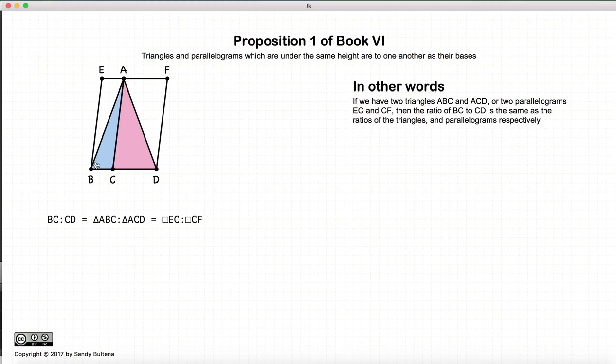So the area of ABC to ACD, the ratio of those two areas, will be equal to the ratio of BC to CD.